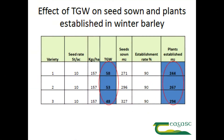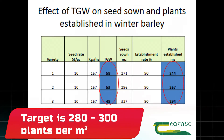On the table here, we can see if we look at those three different thousand grain weights from the three different varieties, ranging from 48 grams up to 58 grams, and we proceed to sow those at 157 kilograms per hectare, or 10 stones per acre across the board, well then we end up with three different plant establishments — anything from 244 for the higher thousand grain weight, up to 294 for the lower thousand grain weight. Bear in mind that we need to get a plant establishment of somewhere between 280 and 300 plants per square meter.